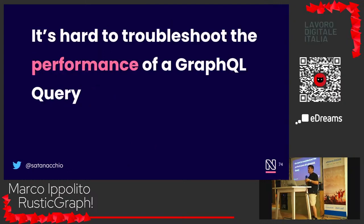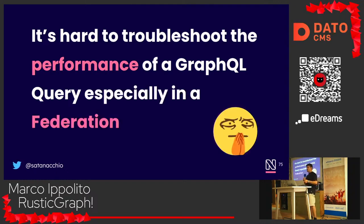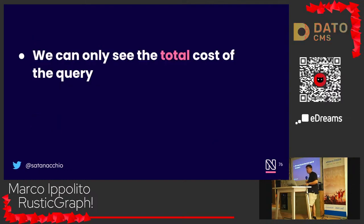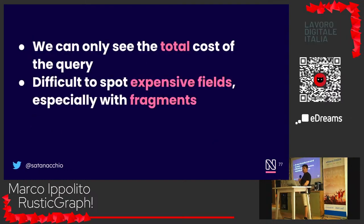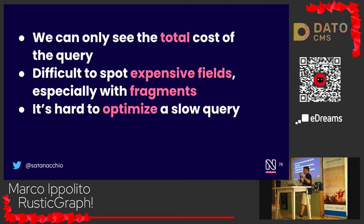It's quite hard to troubleshoot the performance of a GraphQL application because there are many factors — probably even more than with a traditional REST architecture. In a federation the problem is multiplied. We can only see the total cost of a query from the developer tools; it's very hard to spot expensive fields, especially when using fragments. And it's hard to optimize a slow query without tools to understand why it's slow.